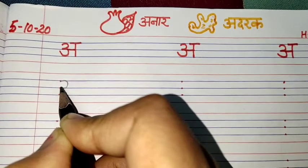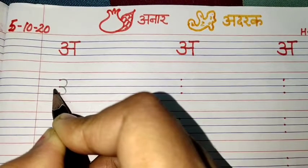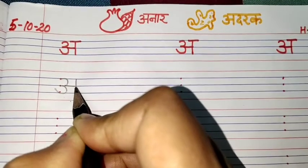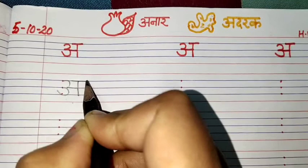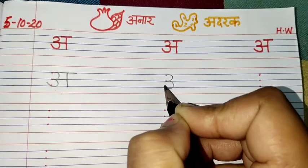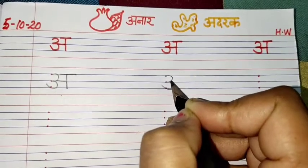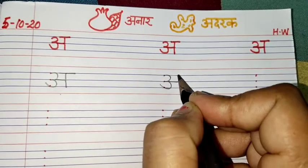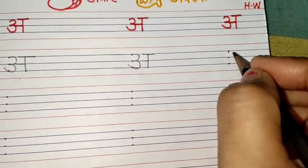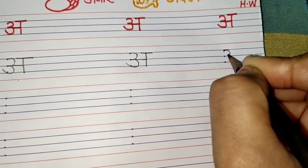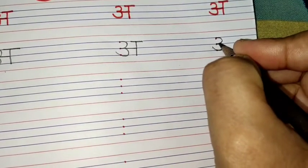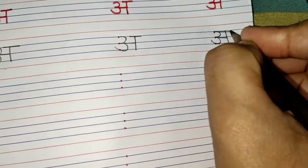A se anaar. Again curve, again curve, again curve. Dot se thoda sa oopar le jayenge. Curve, again curve. Don't touch this blue line. Then sleeping line, standing line, topi.